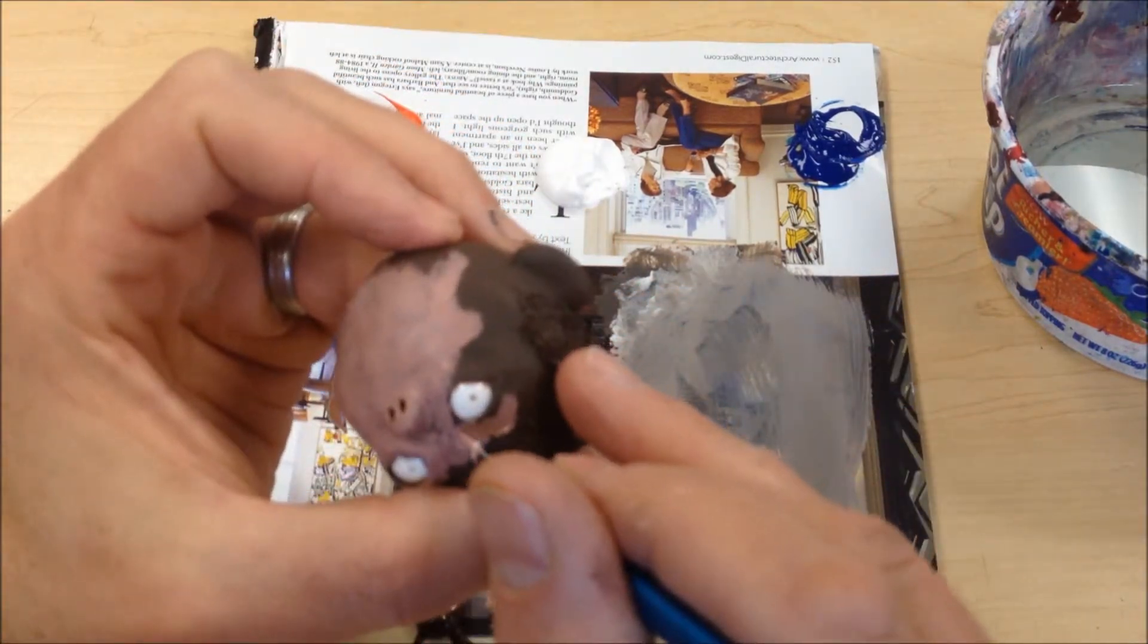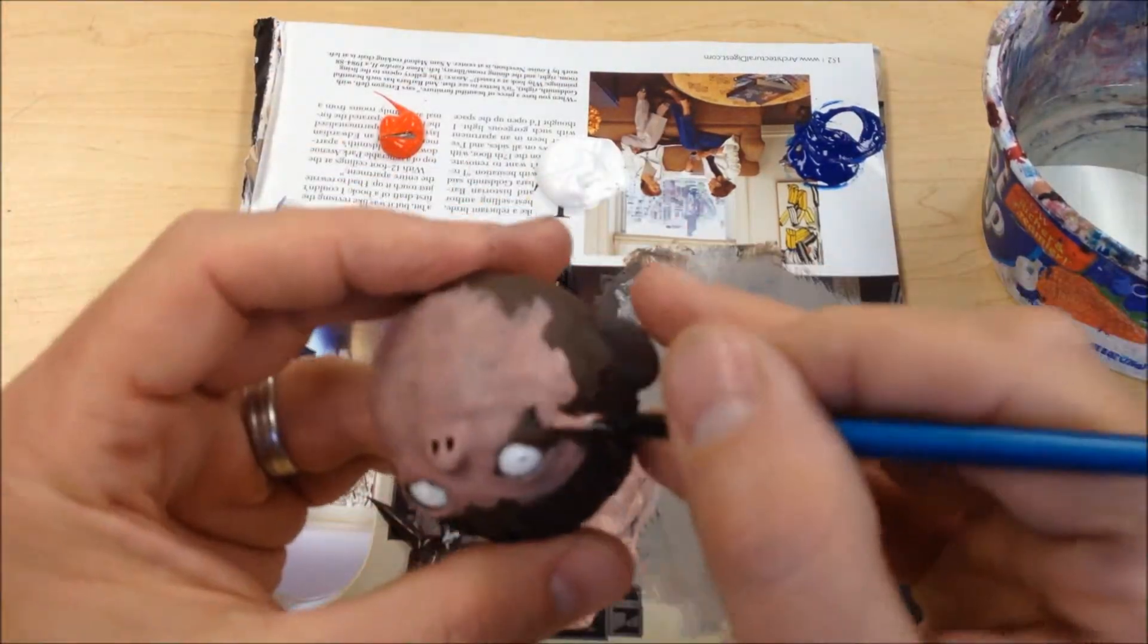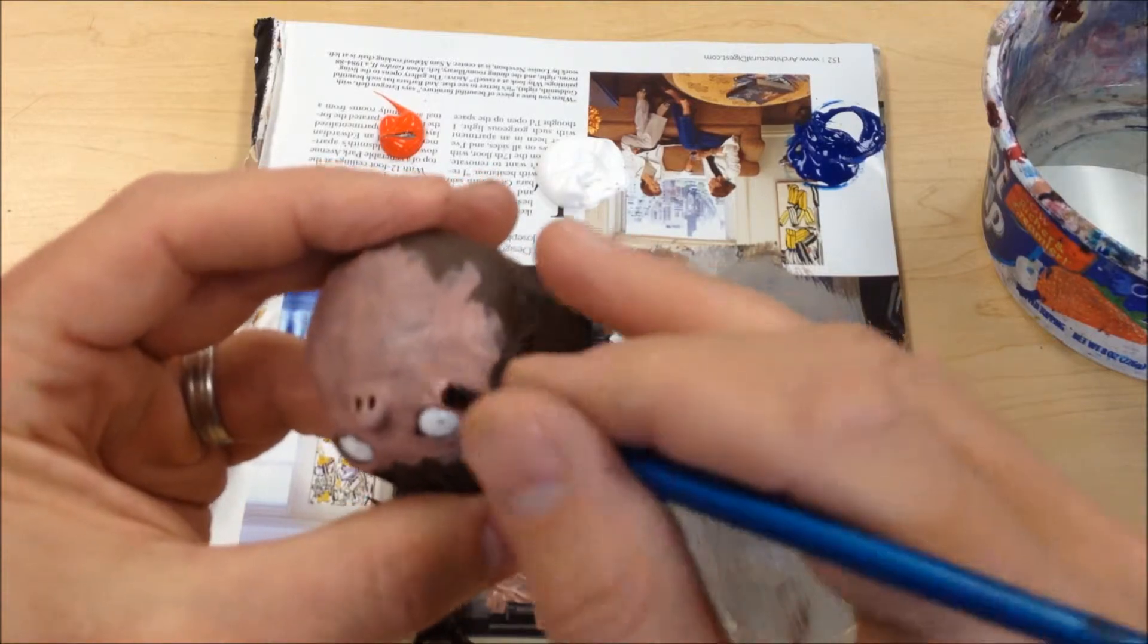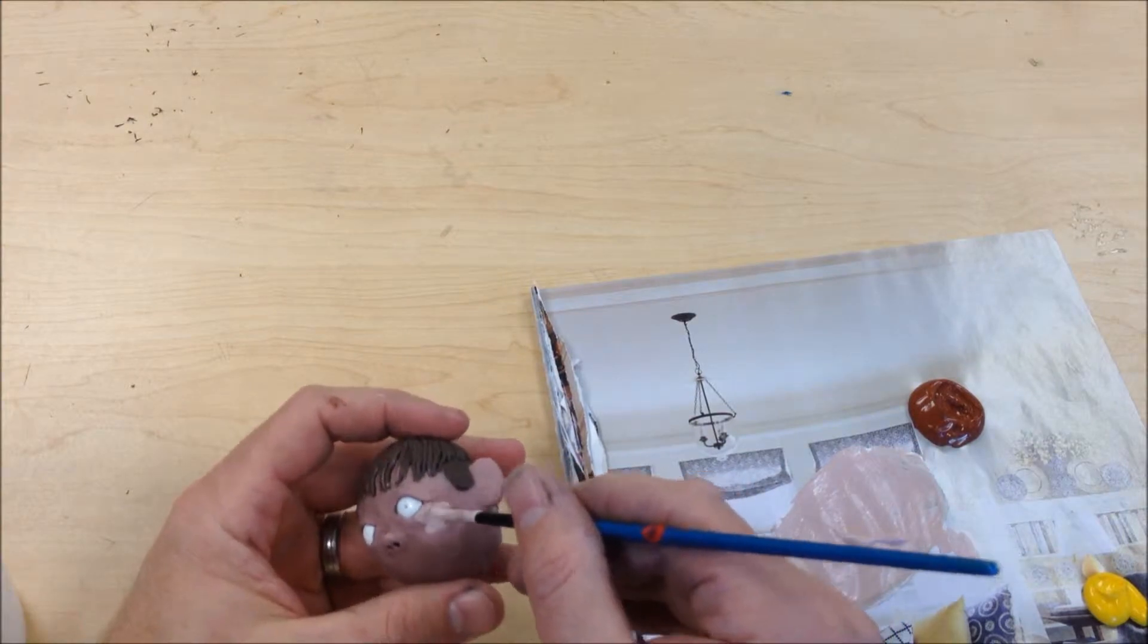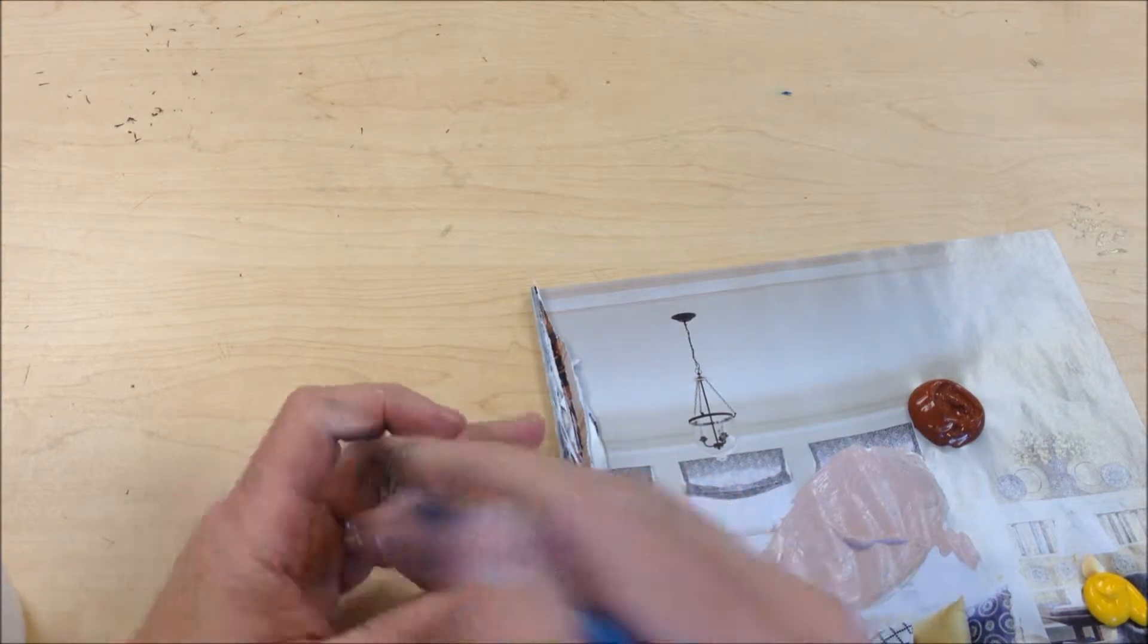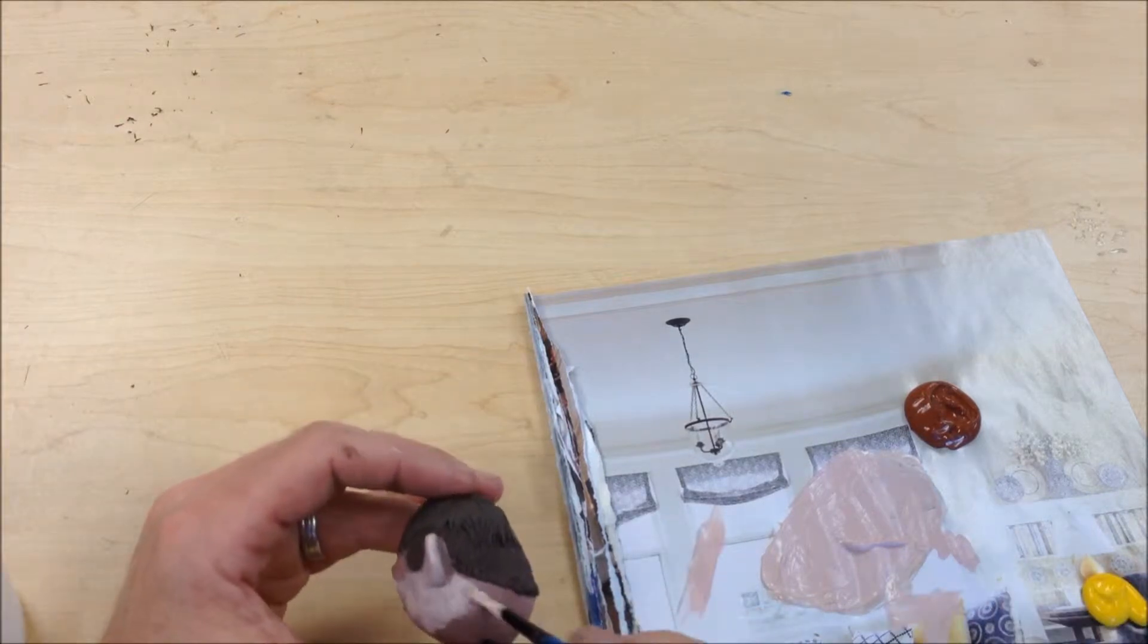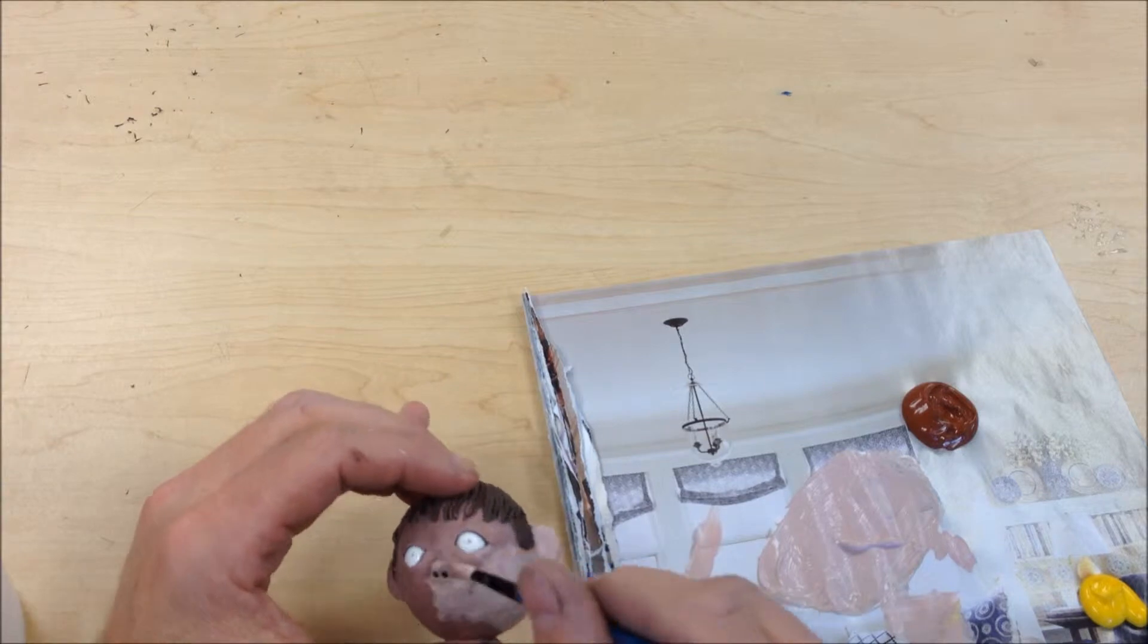So I'm going to go ahead and cover the whole thing, making sure to carefully get in between each hair. Cover it with a skin tone, a general medium skin tone. And as I work, I start to realize maybe this time I can let a little more of the undercolor show through.